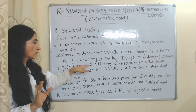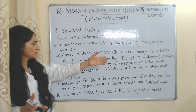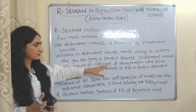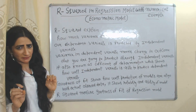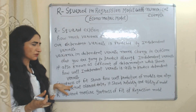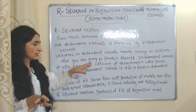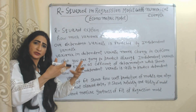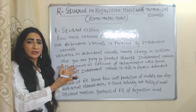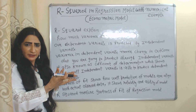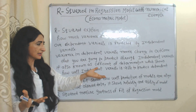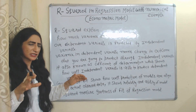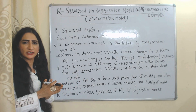R-squared is also known as the coefficient of determination, which shows how well the independent variable is able to predict the dependent variable. Goodness of fit shows how well the predictions of a regression model are aligned with actual observed data — it shows the reliability and ability of your model, and R-squared basically measures the goodness of fit of a regression model.